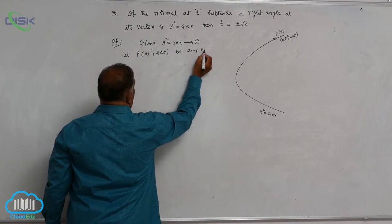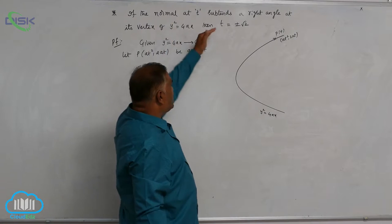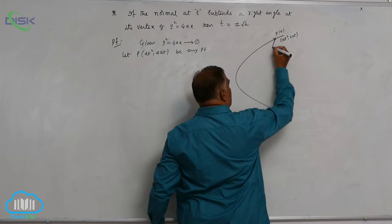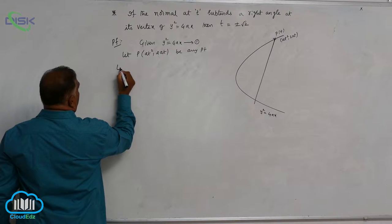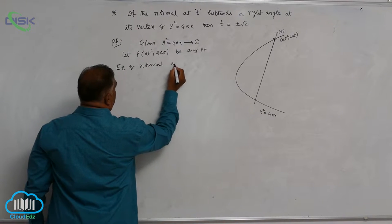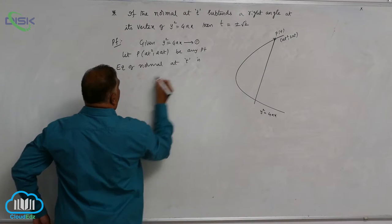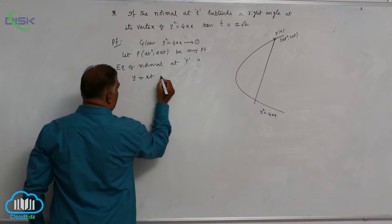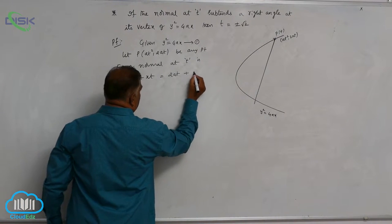Now, according to the problem, normal at t. Draw the normal. This is the normal. So, equation of normal at t is y plus xt is equal to 2at plus at cubed.